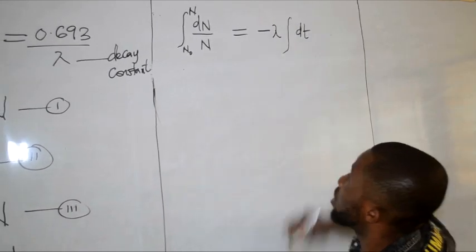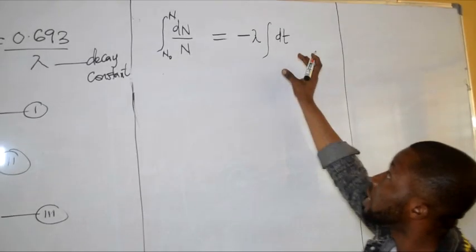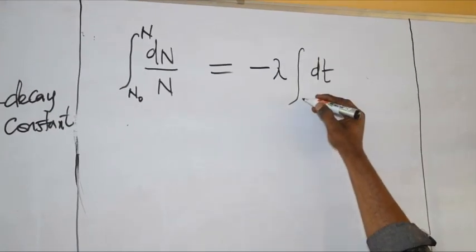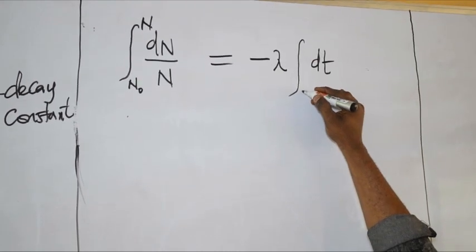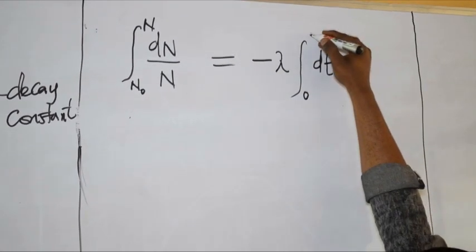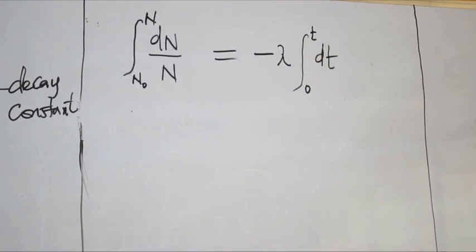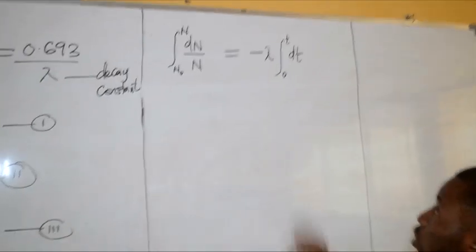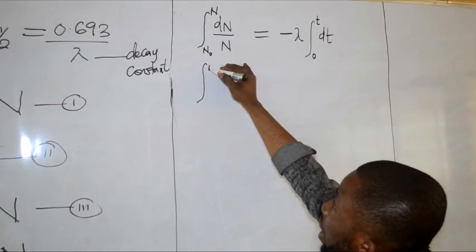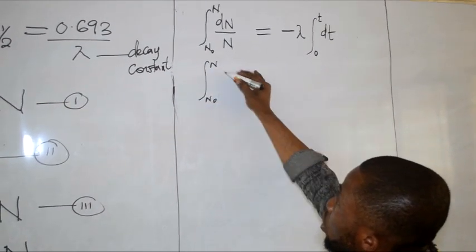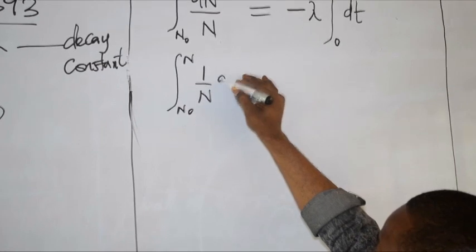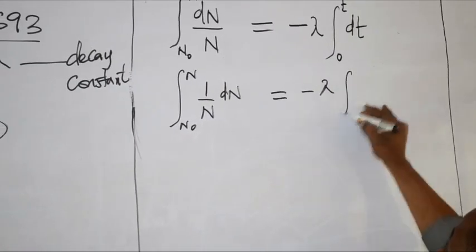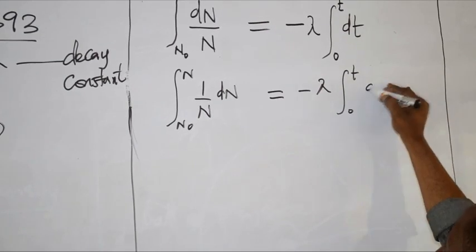We don't allow negative signs or constants after an integral sign, so we are left with dt. Similarly, we also take the definite integral of the right side, meaning we look at time when t was zero and then at the final time. So arranging this, we have the integral from N-naught to N of 1 over N dN, equals negative lambda times the integral from 0 to t of dt.